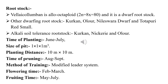Other dwarfing rootstocks include Kurkan, Olar, Nileshwar Dwarf, and Totapuri Red Small. Some alkaline soil-tolerant rootstocks include Kurkan, Nakri, and Olar. Monsoon season is a good time for planting. A pit size of one cubic meter is sufficient for mango plantation. Standard planting distance is 10x10 meters, giving 100 plants per hectare. For dwarf varieties like Amrapali and Samar Bahisht, the planting distance is maintained at 2.5x2.5 meters, allowing 1600 plants per hectare.